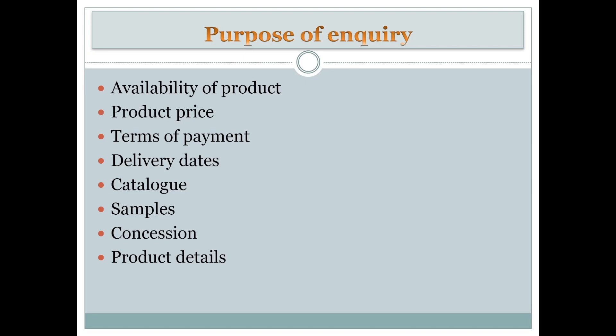The next purpose is catalogs or samples. Sometimes certain companies provide samples of their products or catalogs of the items they have. You can inquire and ask them to send you samples so you can check whether the product is appropriate for your use or whether it needs modification. You can also look at their catalogs to see what other products are available and decide what to buy.